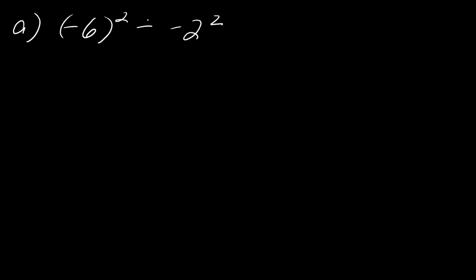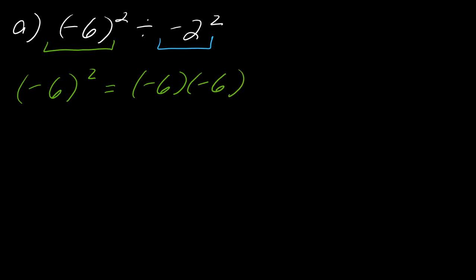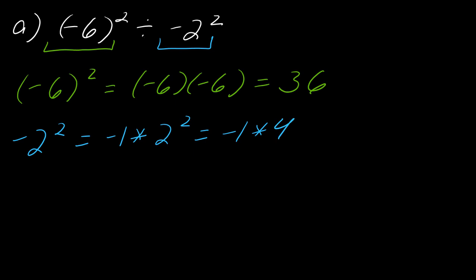Now let's try: negative 6 with parentheses squared, divided by negative 2 squared. Pause and give it a try. Negative 6 in parentheses squared means negative 6 times negative 6, which equals 36. For negative 2 squared without inner parentheses, remember it's really negative 1 times 2 squared, so negative 1 times 4 equals negative 4. So the whole expression becomes 36 divided by negative 4, which equals negative 9.